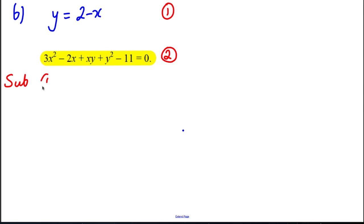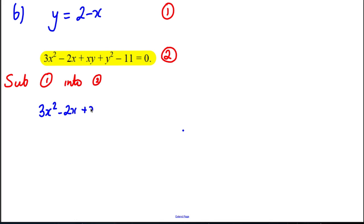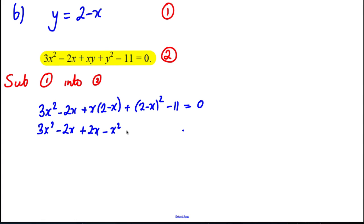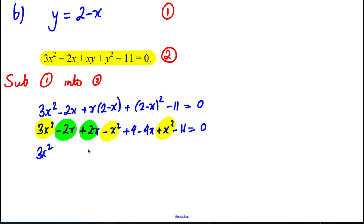Substituting y = 2 - x into the curve equation gives: 3x² - 2x + x(2 - x) + (2 - x)² - 11 = 0. Expanding: 3x² - 2x + 2x - x², plus 4 - 4x + x² - 11 = 0. Tidying up: 3x² - x² + x² = 3x², the x terms give -4x, and the constants give 4 - 11 = -7. So we have 3x² - 4x - 7 = 0.